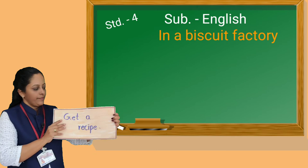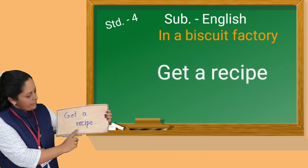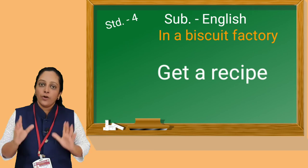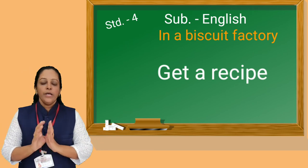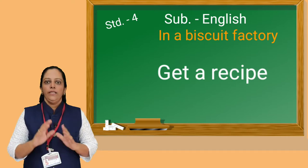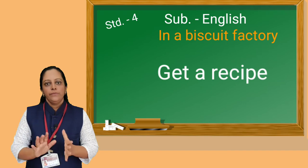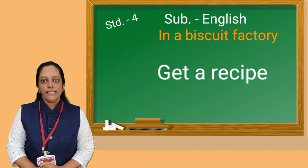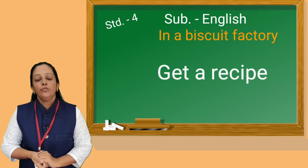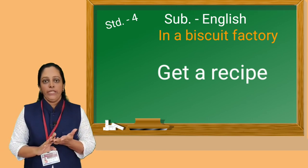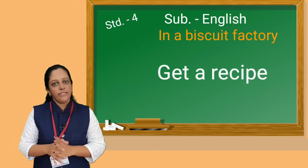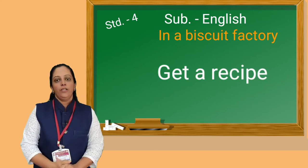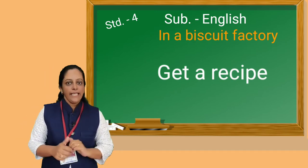Step number one: Get a recipe. Here we see a new word — recipe. Recipe means the instructions for cooking or preparing something to eat. For every food item, we have to know the recipe first. With the help of the recipe, we come to know which things we need for cooking, how much time it will take for cooking, and the perfect measurement of each item we need for cooking. If we follow the recipe, the food item becomes tasty and delicious.